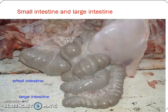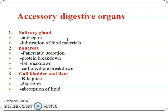Finally, the accessory digestive organs are the salivary gland, pancreas, gallbladder, and liver. These organs also help indirectly in digestion. The salivary gland provides antiseptic and lubrication of food materials. The pancreas — pancreatic secretions help to break down proteins and also help in fat and carbohydrate breakdown. Similarly, gallbladder and liver secrete bile, which helps in digestion and also in the absorption of lipids.